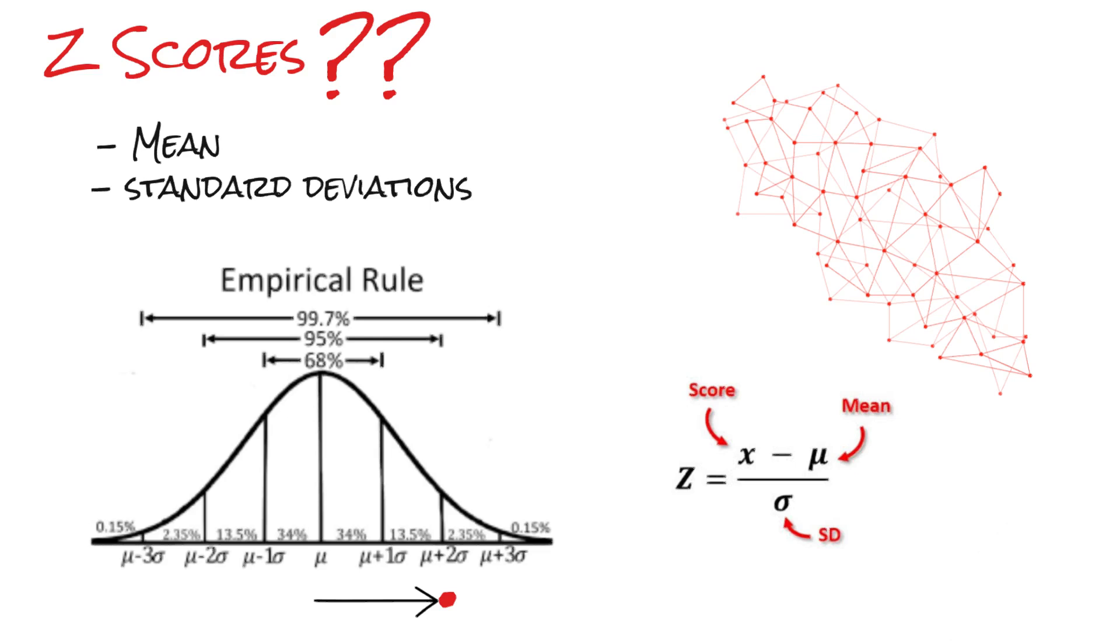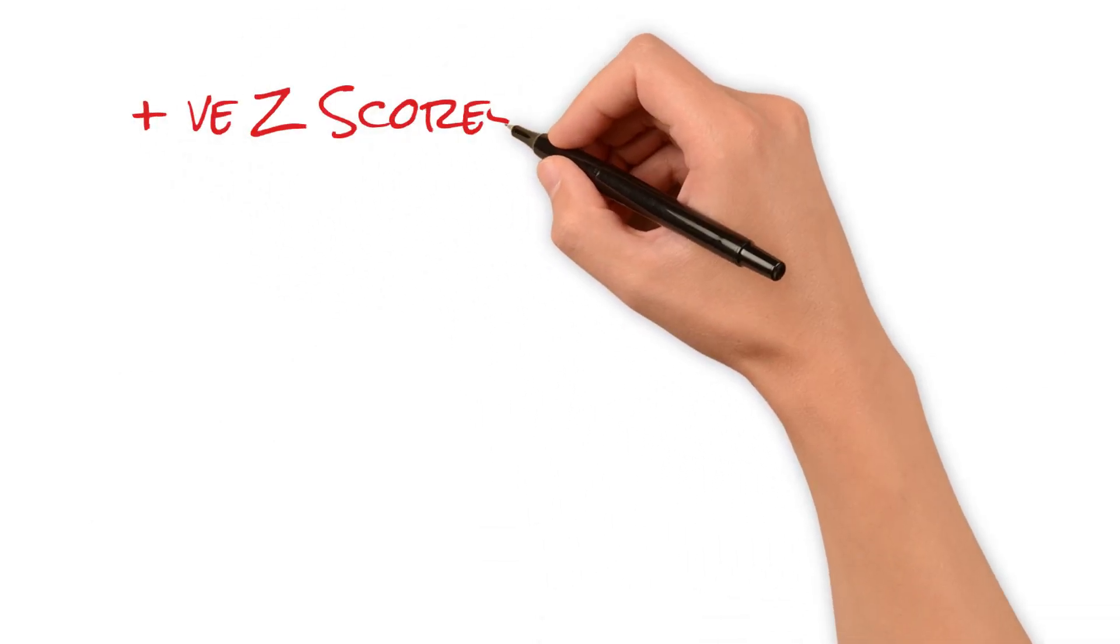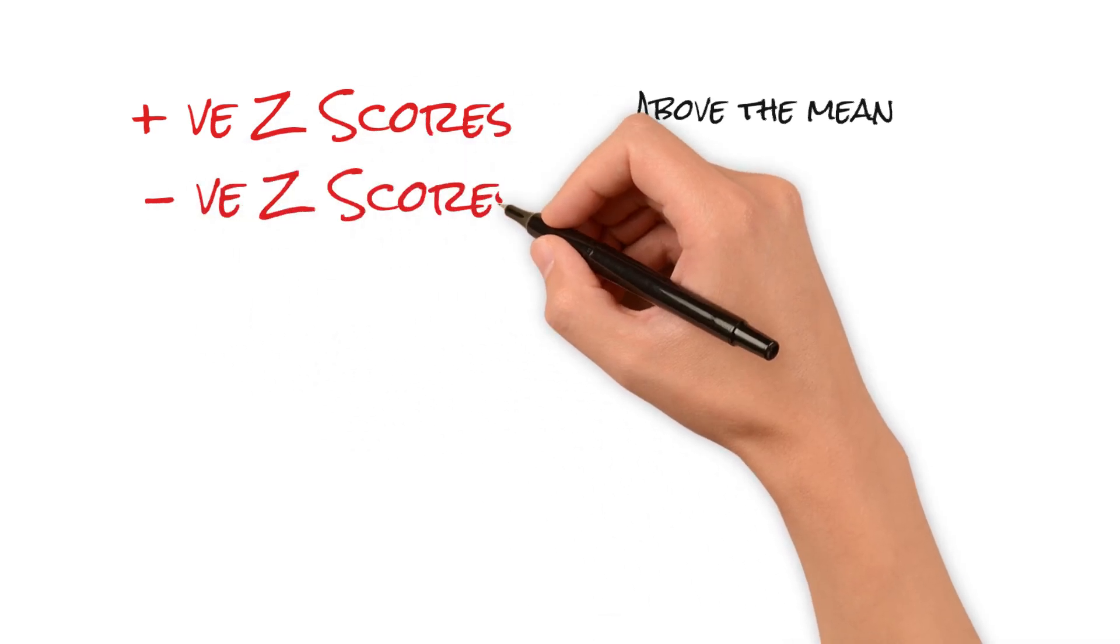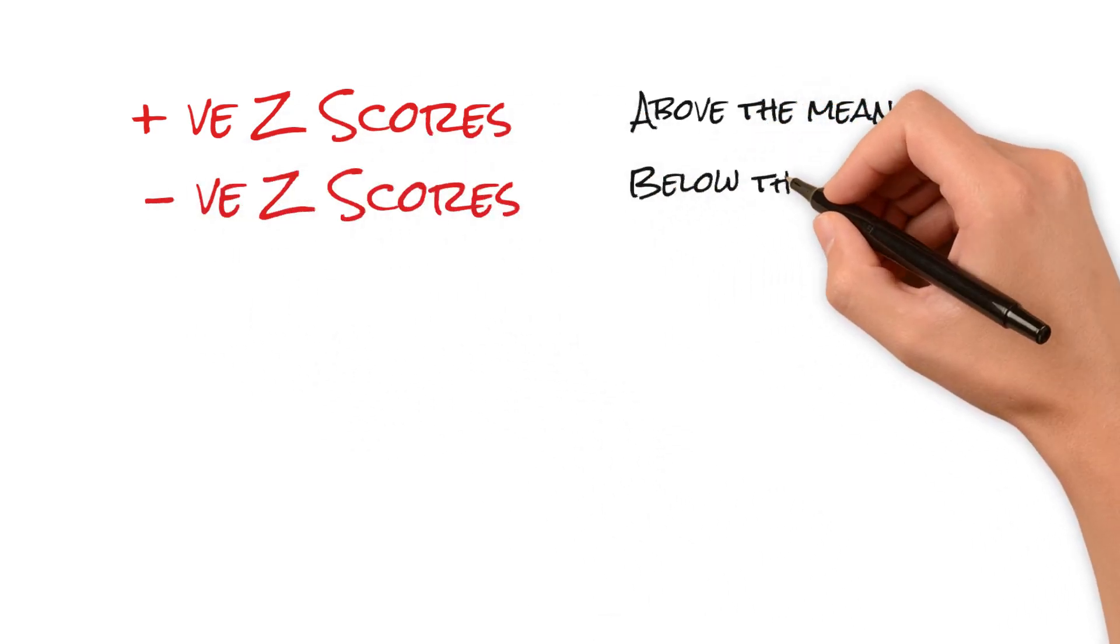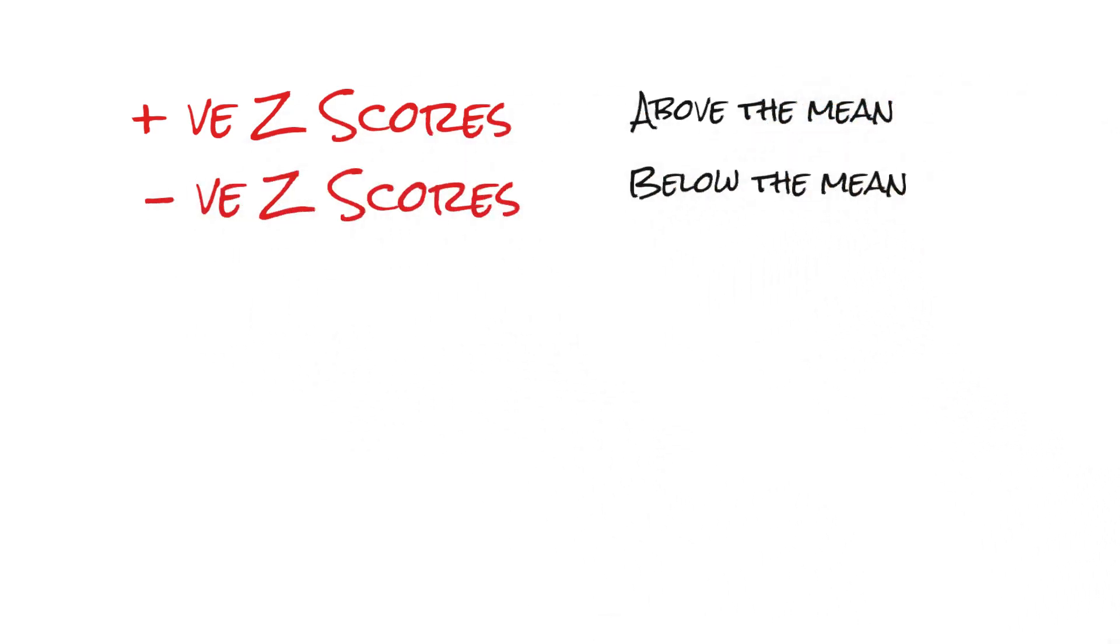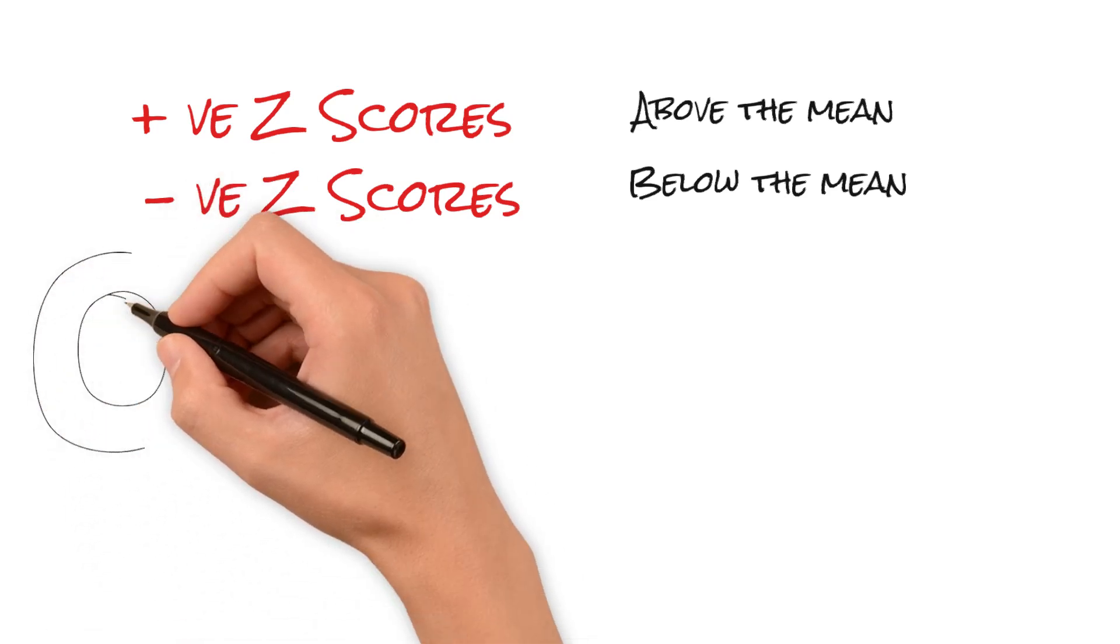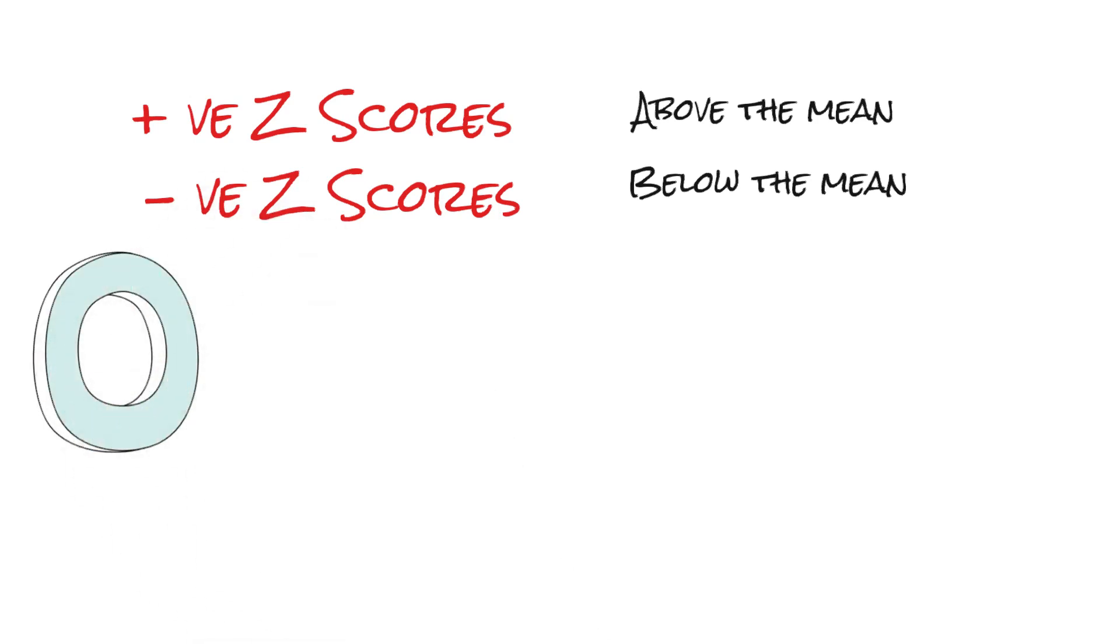Now, interpreting Z-scores is vital. A positive Z-score means the data point is above the mean, while a negative Z-score means it's below. The magnitude of the Z-score indicates how many standard deviations the data point is from the mean. A Z-score of 0 means that the data point is right on the mean.